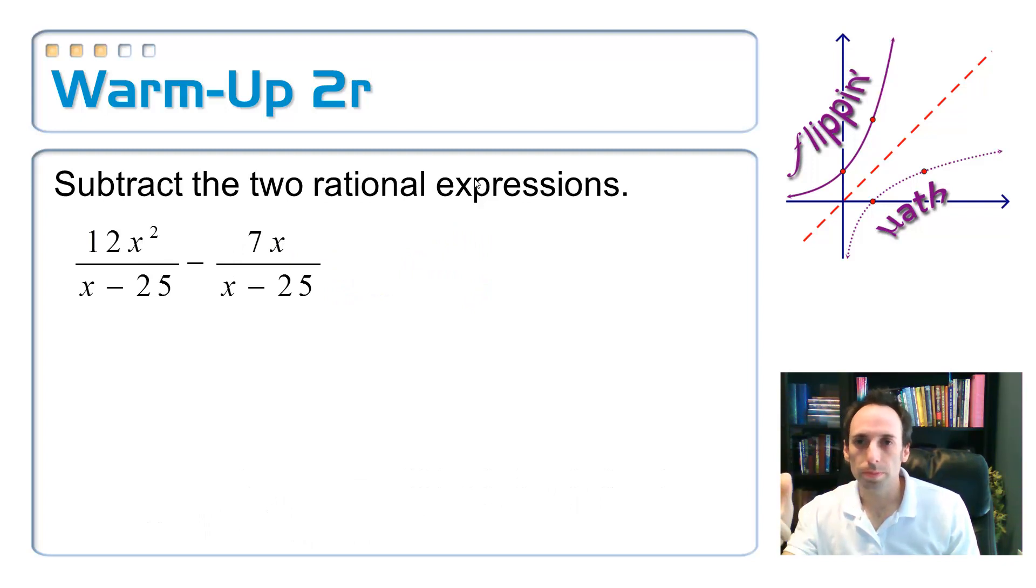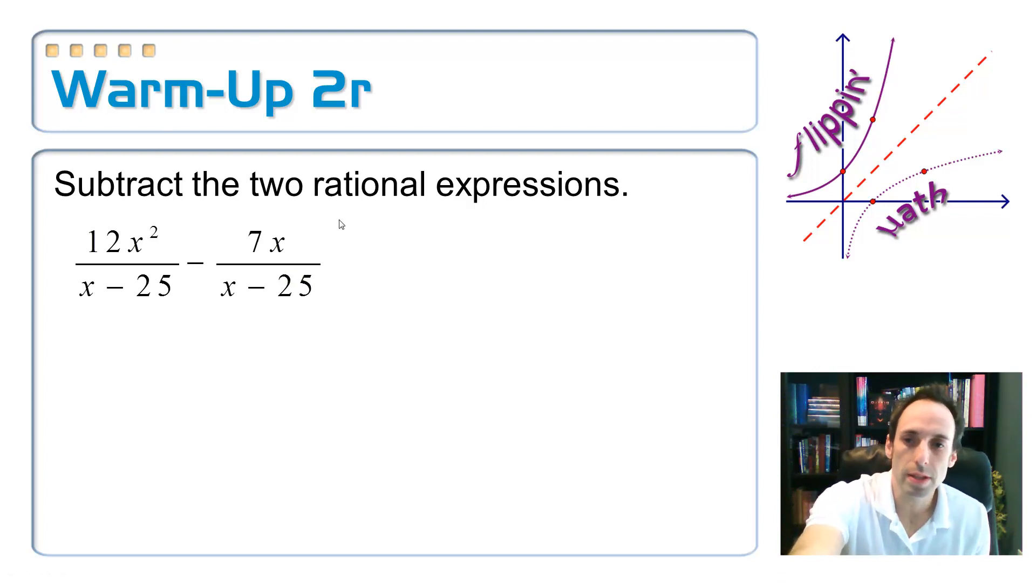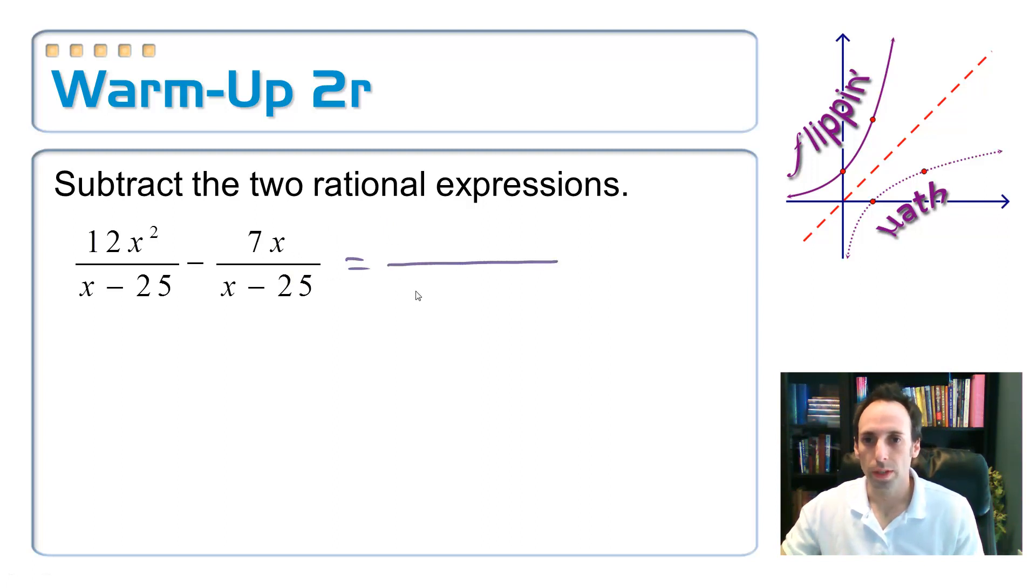So something similar. Here we have algebraic expressions. We have two rational expressions that we're subtracting. They already have the same denominator, so we keep it the same as x minus 25. Just subtract the tops in the same order that you see. So I have 12x squared minus 7x.